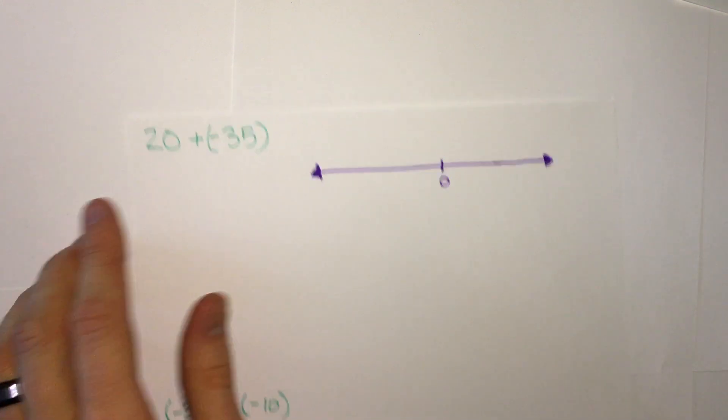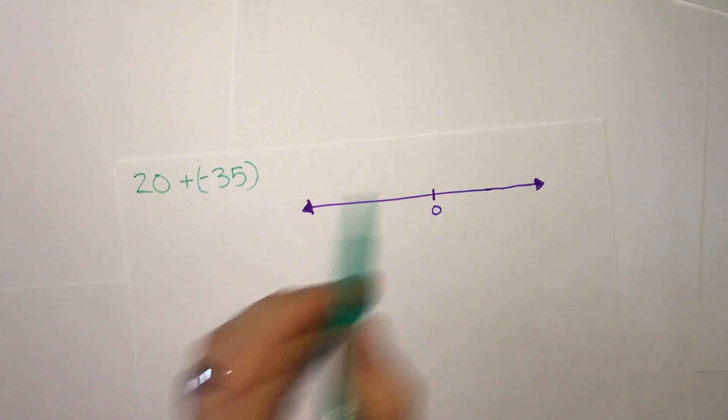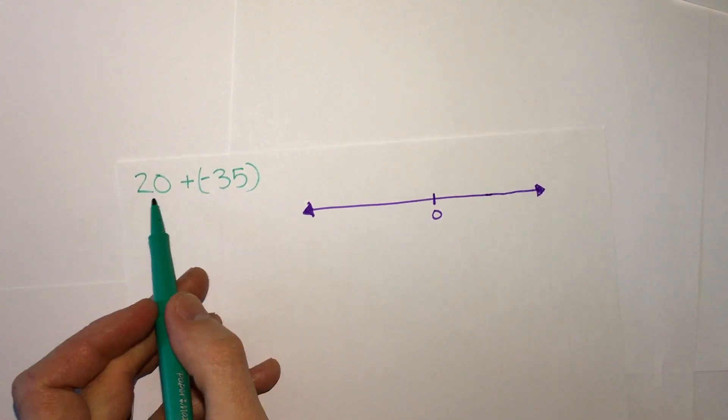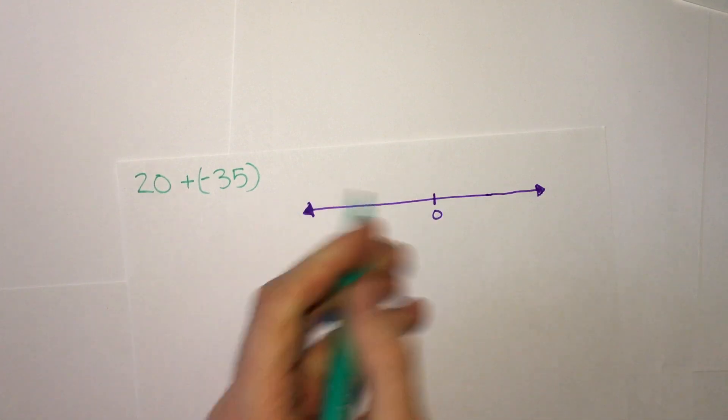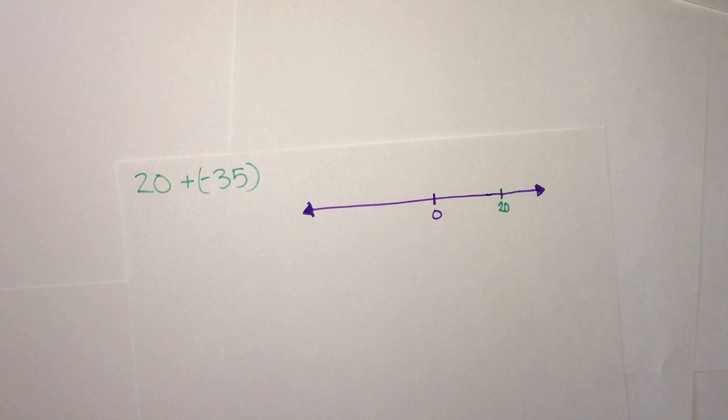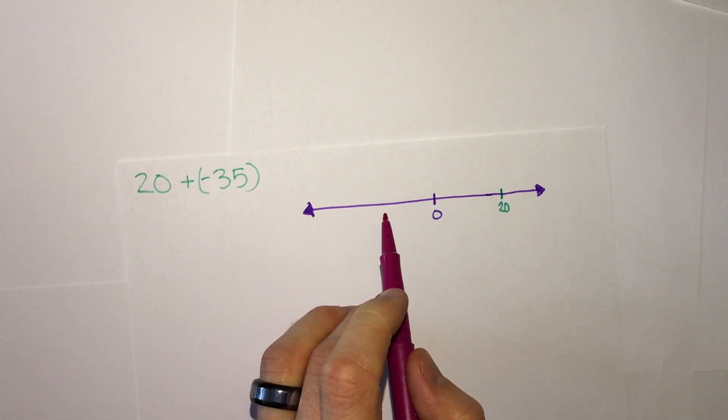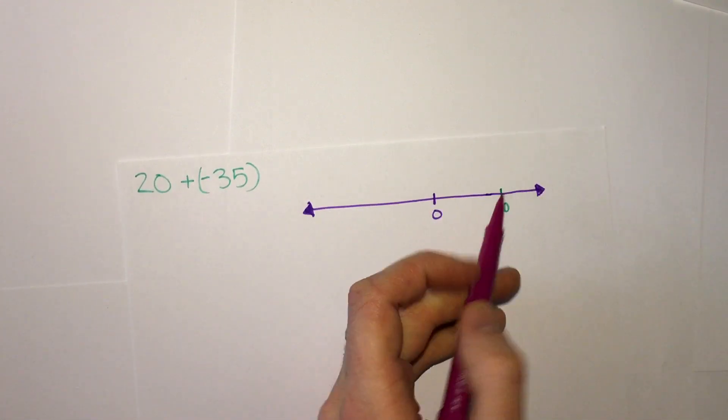The question: 20 plus negative 35. If we look at a number line to help us, this number line is at 0, we're starting at 20. Now we're adding negative 35. Now what that means, if it's negative we're going to be going to the left on our number line, because normally adding we go to the right.